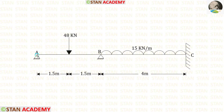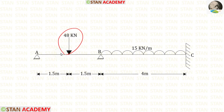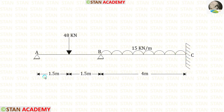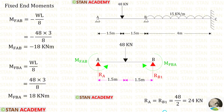Before analyzing this beam, let us see the beam one time. In this beam there are two spans: span AB and span BC. In span AB we have a point load acting at the center. In span BC we have a uniformly distributed load acting for the full span. At points A and B we have hinged supports, and at point C we have a fixed support.